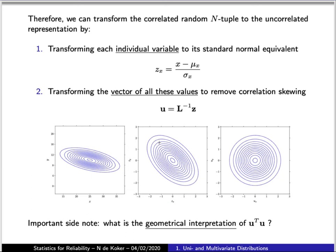And then we account for this skewing by removing correlation. So we finally end up with uncorrelated standard normal variables where now our contours are circles.